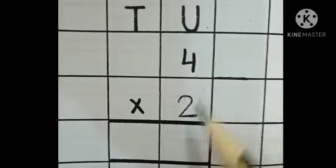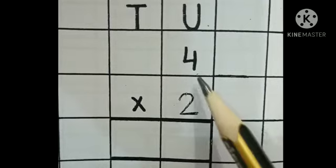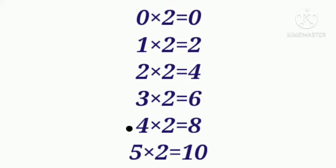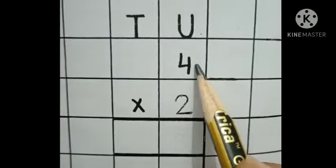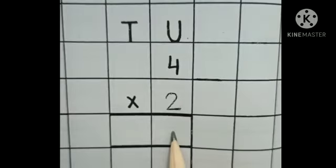Next one. This is number 4 and this is number 2. Ab humne 2 ka table 4 tak read karna hai. 4 times 2 is 8. Jab humne 2 ka table 4 tak read kiya, to hamare paas answer aaya 8. Ab hum yahan write karenge 8.